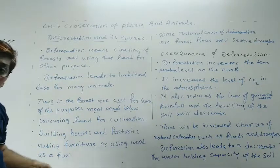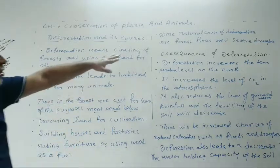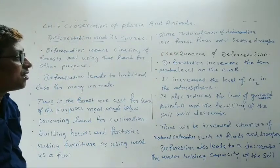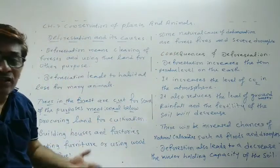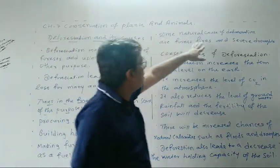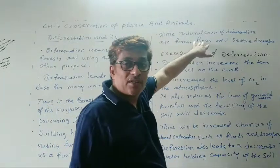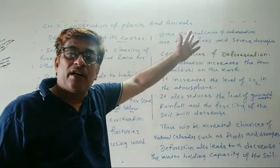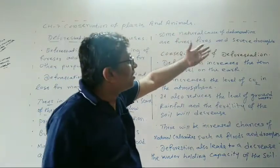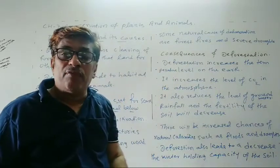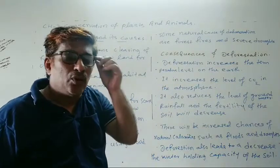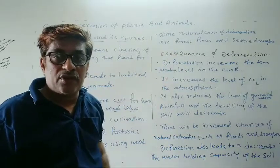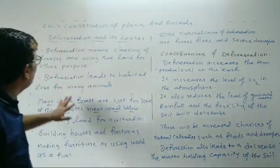The fourth aspect is some natural causes of deforestation. Natural causes of deforestation include forest fires — where the forest gets fire naturally. Also, if there is no rain continuously, the forest will be destroyed. These are the natural causes.